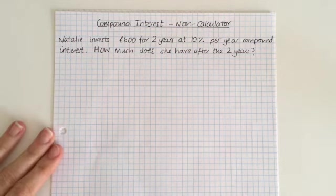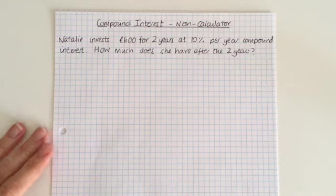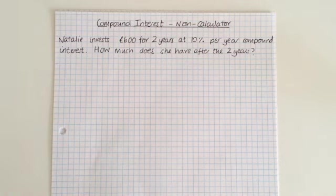So we have to do, remember compound interest is the accumulated interest. So at the end of year one she gets a new amount in her account and then it's 10% on that much money. So we have to work out each year separately.